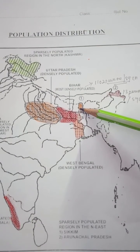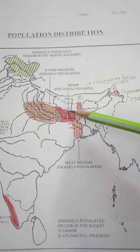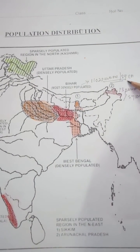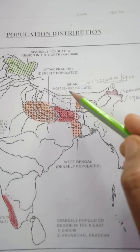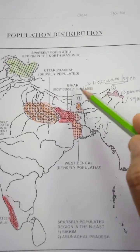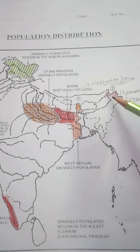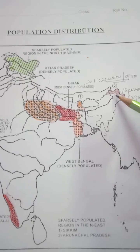So to summarize: according to total population, Uttar Pradesh is highest and Sikkim is lowest. But when we talk about per square kilometer or density, Bihar is highest and Arunachal Pradesh is lowest.